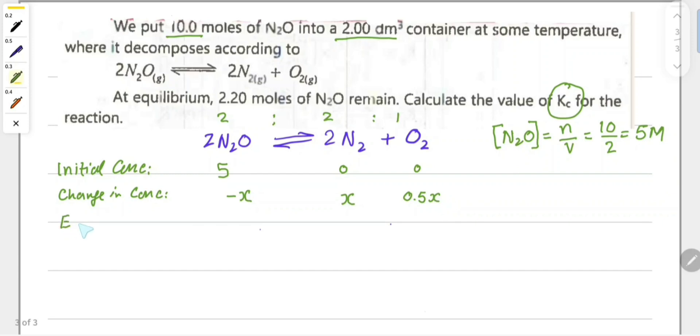At equilibrium concentration - I for initial, C for change, E for equilibrium - we will have 5 minus x molar concentration of dinitrogen oxide, x molar concentration of nitrogen gas, and 0.5x concentration of oxygen gas.